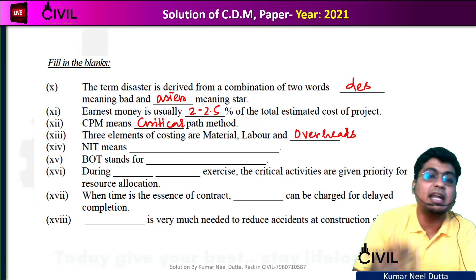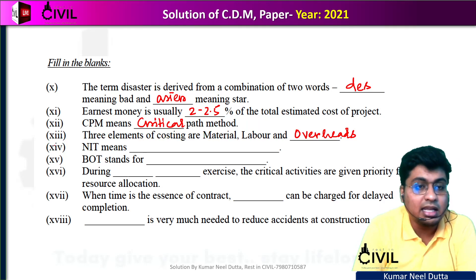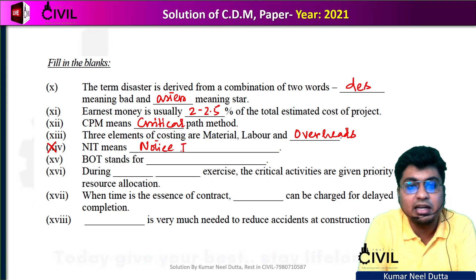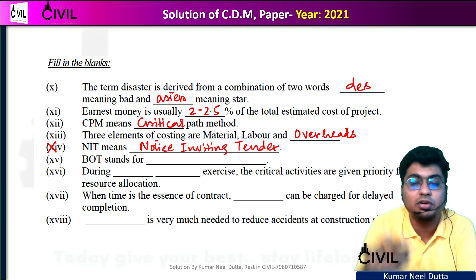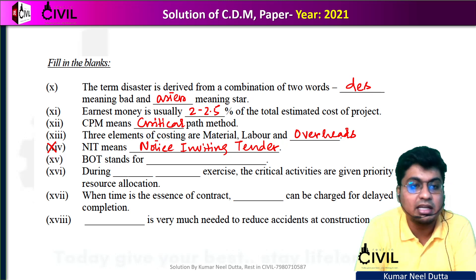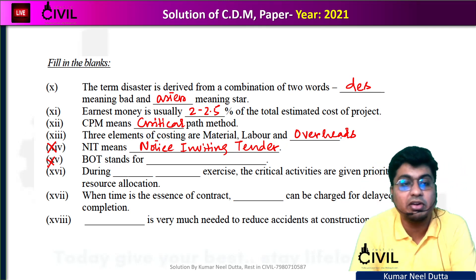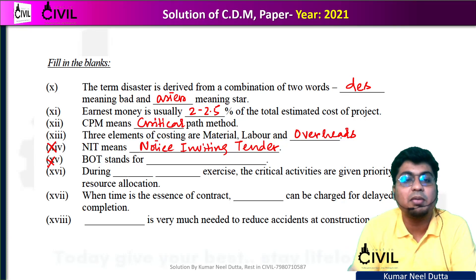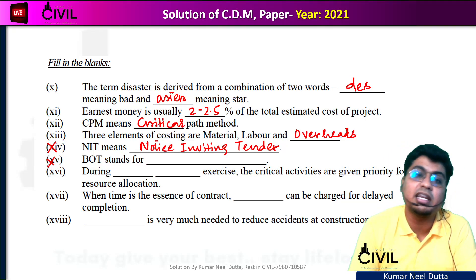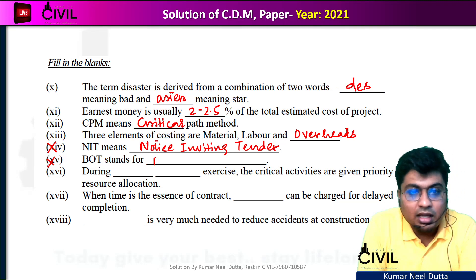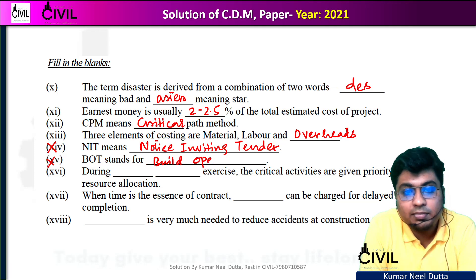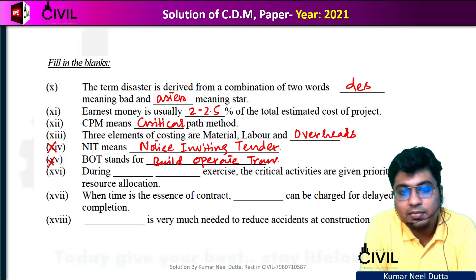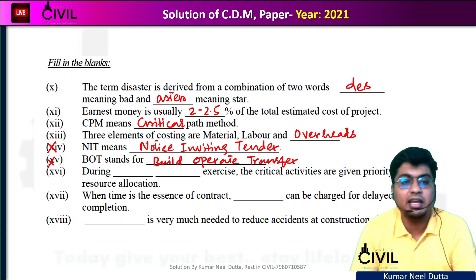Number 14: NIT stands for Notice Inviting Tender. You have studied this in the previous semester under contract accounts. BOT caused some confusion — BOT stands for Build, Operate, Transfer. It is not Board of Trade units. Build, Operate, Transfer — this is a basic civil engineering concept.